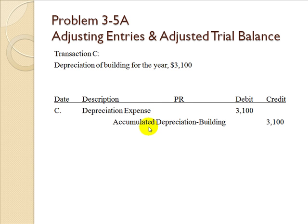The difference between the building account and the accumulated depreciation for the building account is known as the book value. The building has a debit balance of $200,250. Adding $3,100 to accumulated depreciation gives us a new balance and a new book value. This will update every single month as we record depreciation for the building.